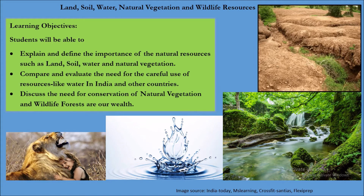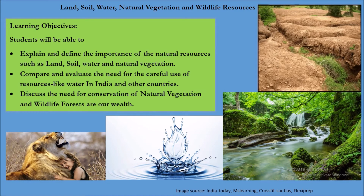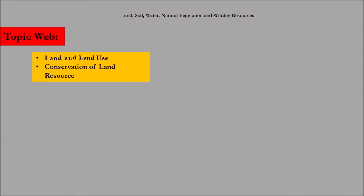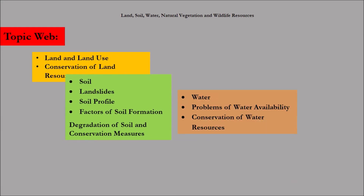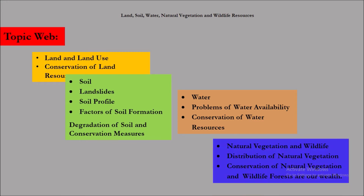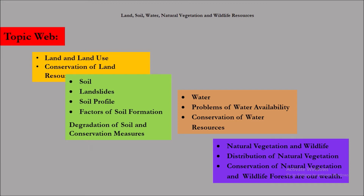Let us look at the subtopics in this chapter. The subtopics are: land and land use, conservation of land resource, soil, landslides, soil profile, factors of soil formation, degradation of soil and conservation measures, water, problems of water availability, conservation of water resources, natural vegetation and wildlife, distribution of natural vegetation, and conservation of natural vegetation and wildlife forests — our wealth banks.